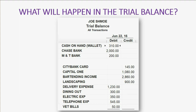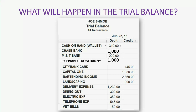So what will happen in the trial balance if you lend a thousand dollars to your friend Danny Deadbeat? If the money came out of Chase Bank, Chase Bank would decrease by a thousand and the current asset account — Receivable from Danny — would show up for the first time in the trial balance as a thousand dollars.